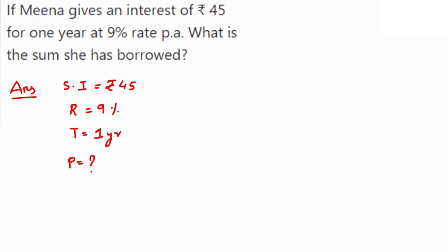We're going to use the SI formula, that is simple interest is equal to P into R into T upon 100. We can directly substitute the values here and get the solution, or we can use one more formula which we get by cross multiplying it. So principal is equal to simple interest multiplied by 100 upon R into T.